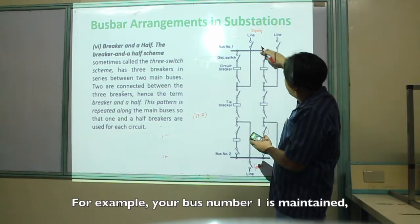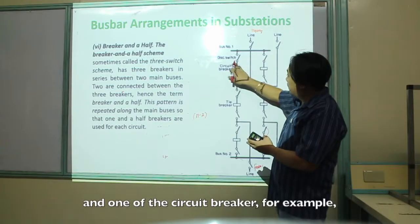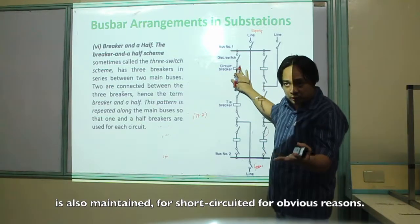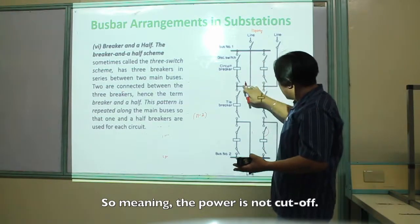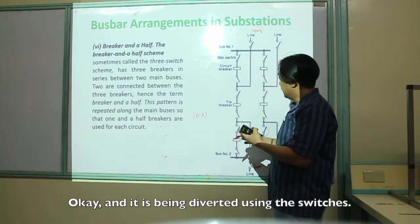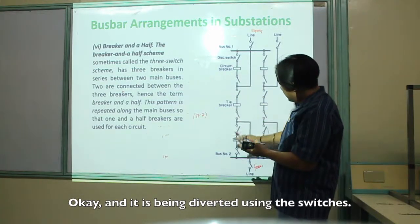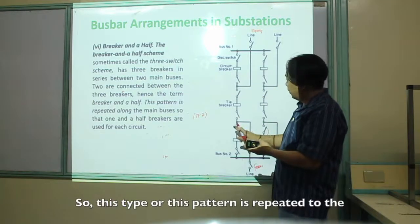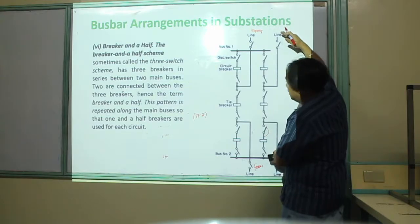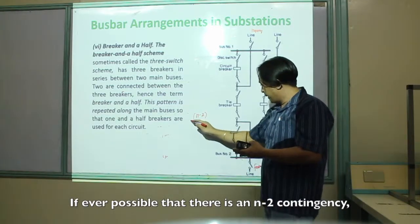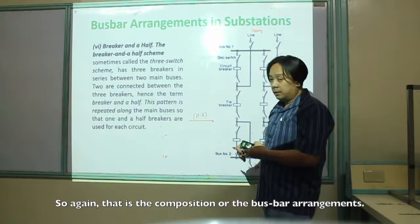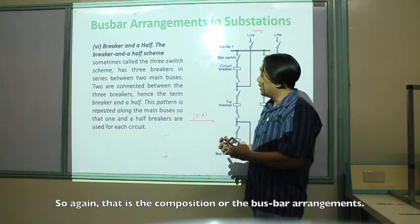For example, if bus number one is being maintained and one of the circuit breakers is also maintained or short-circuited, the power is not cut off. It is diverted using switches. This pattern is repeated for other sections in the event of an N-2 contingency. That is the composition of bus bar arrangements.